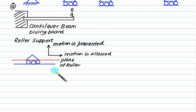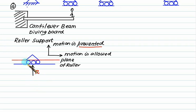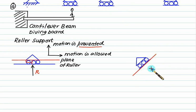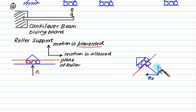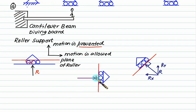When we have a restriction we have a reaction. So for the roller we have a vertical reaction perpendicular to the plane, called R or Ry. Remember: you get a reaction when motion is prevented or restricted, and the normal reaction is perpendicular to the plane. If the roller is inclined at angle theta with the horizontal, the roller reaction is always perpendicular to that plane, resolved as Rx and Ry. For a roller with a vertical plane, the reaction will be perpendicular to that vertical plane.